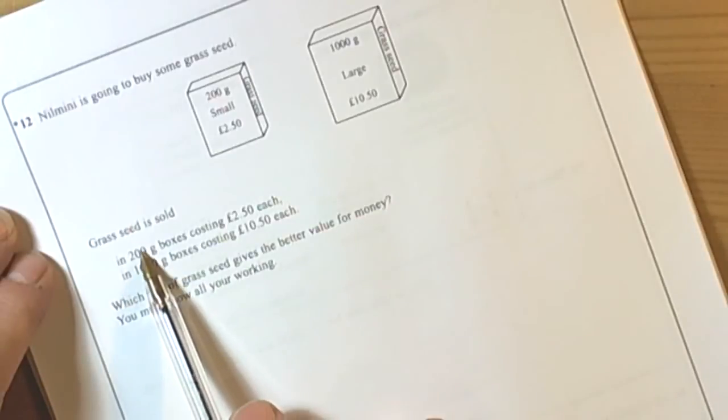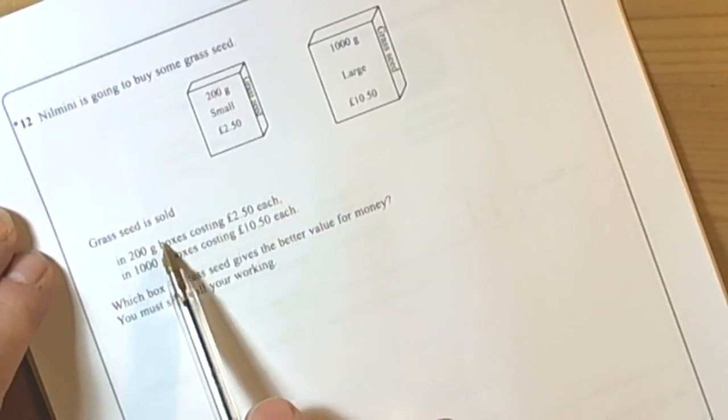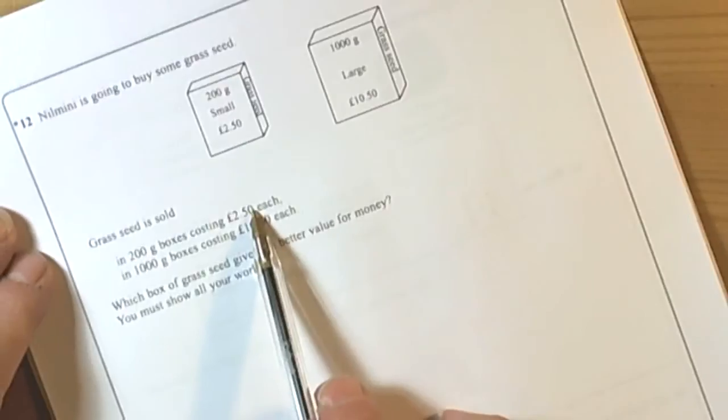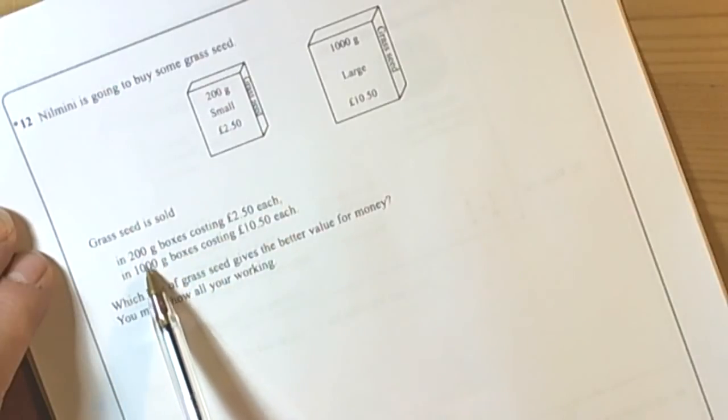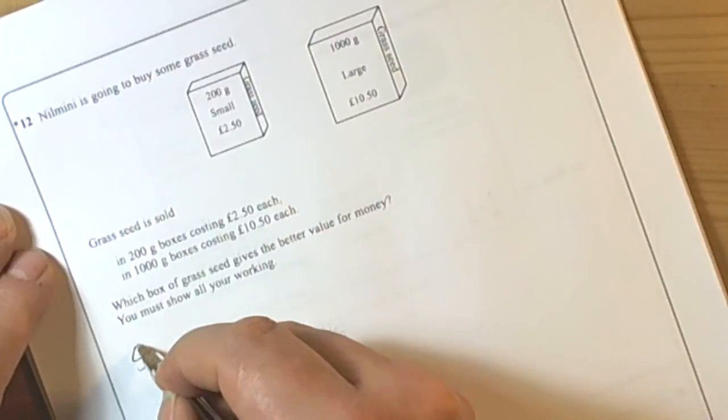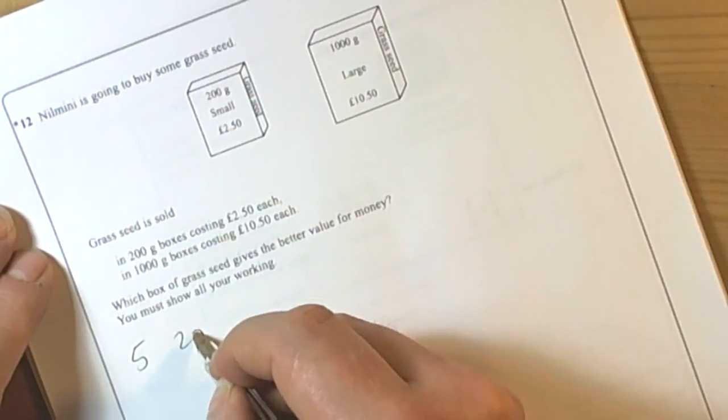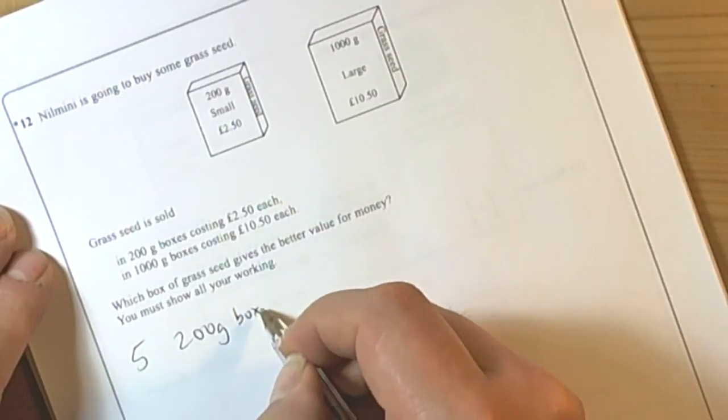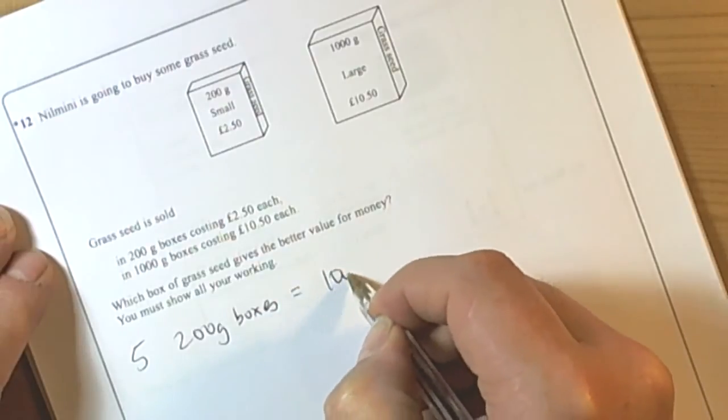Well, we can see hopefully quite quickly that if we do 5 of those boxes, then we'll be looking at like for like 1000g cost. So 5 200g boxes equals 1000g.